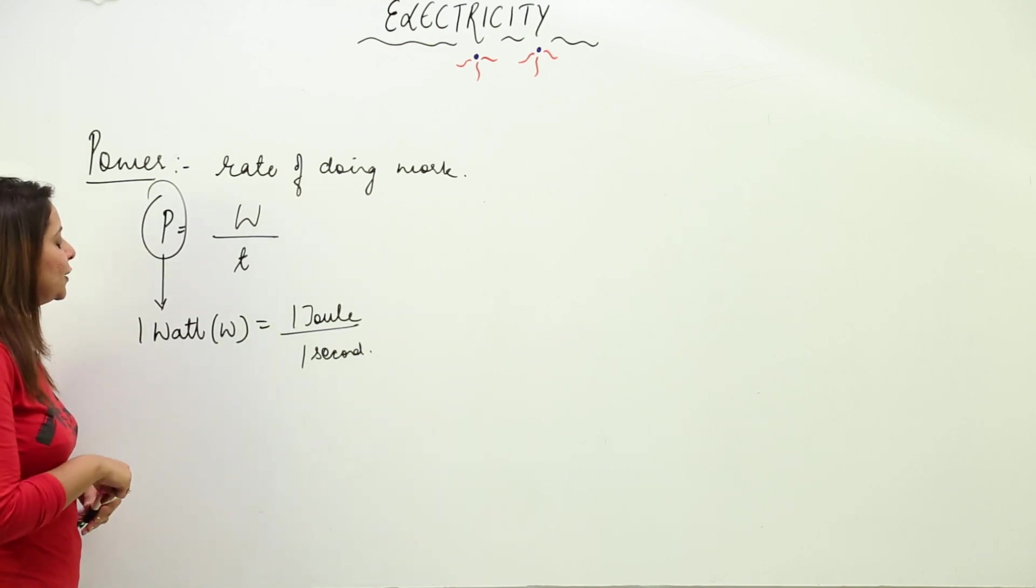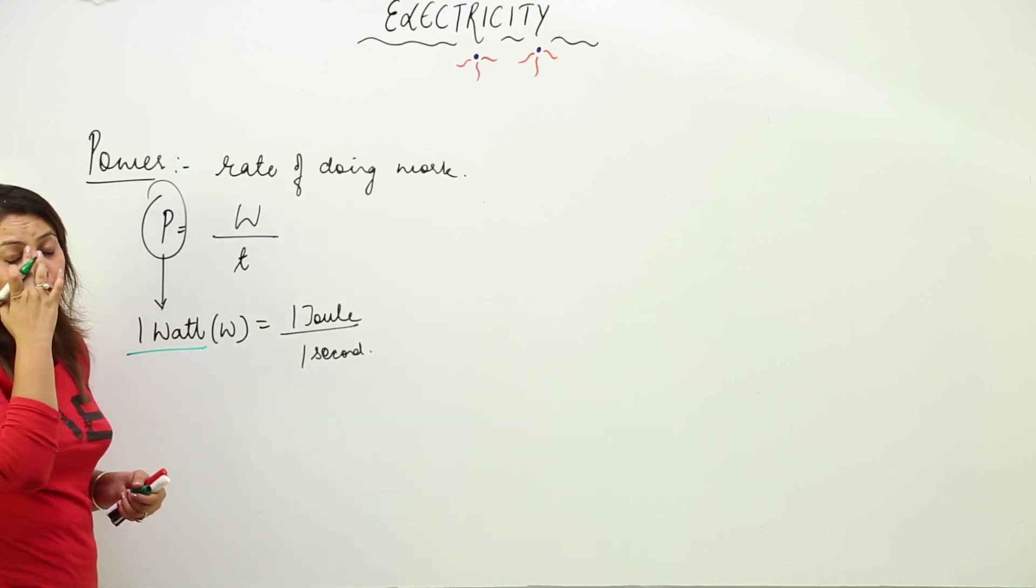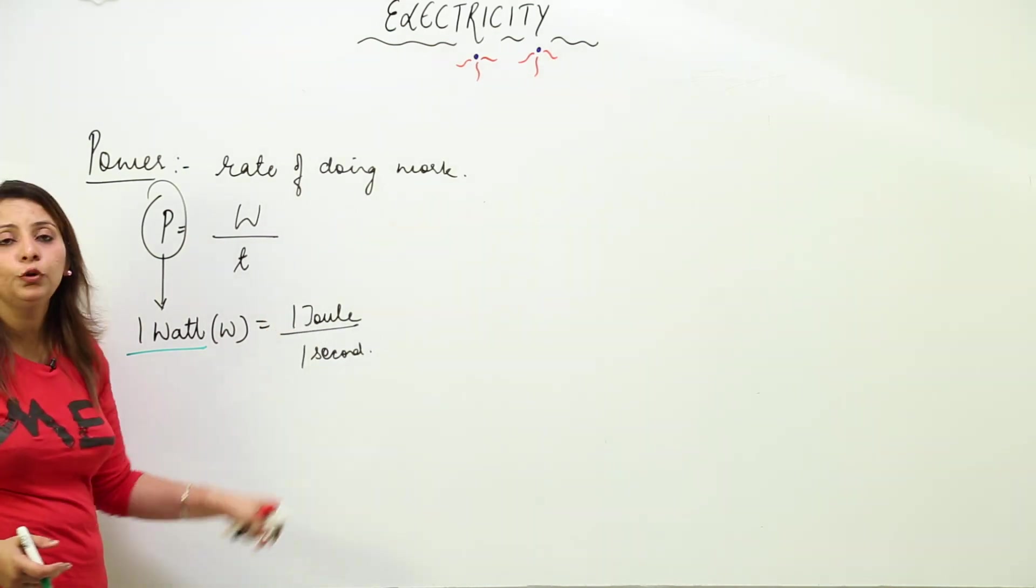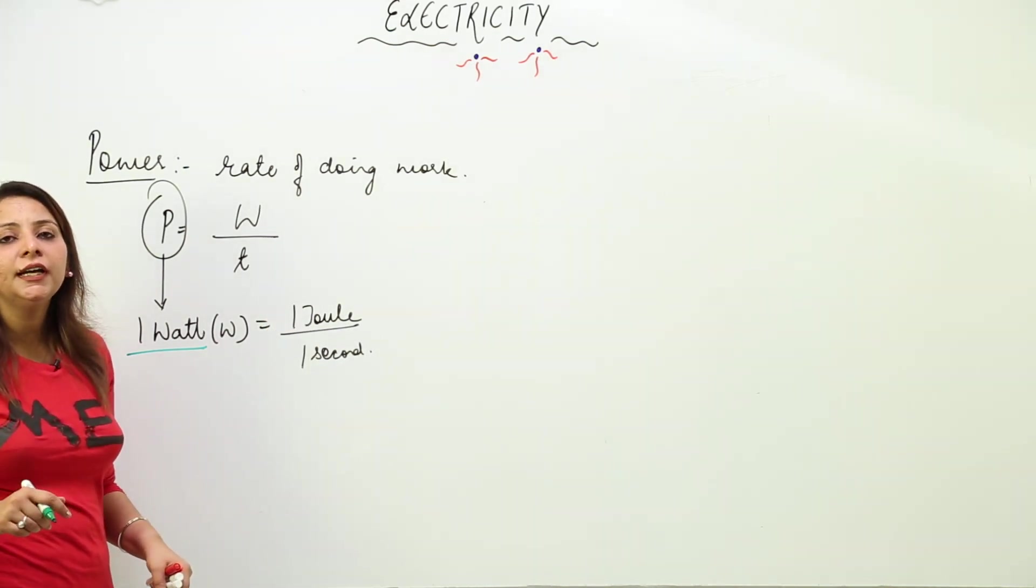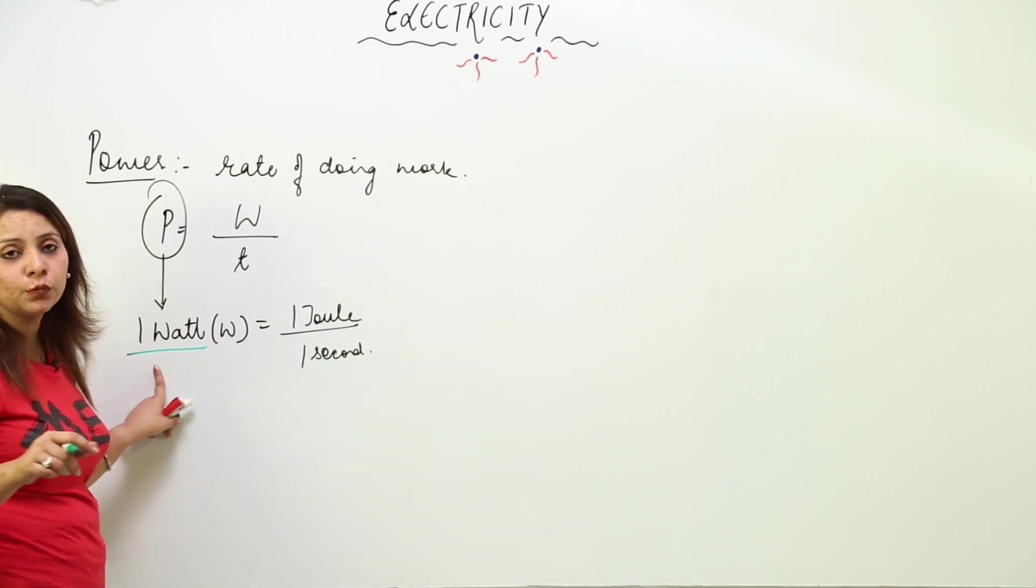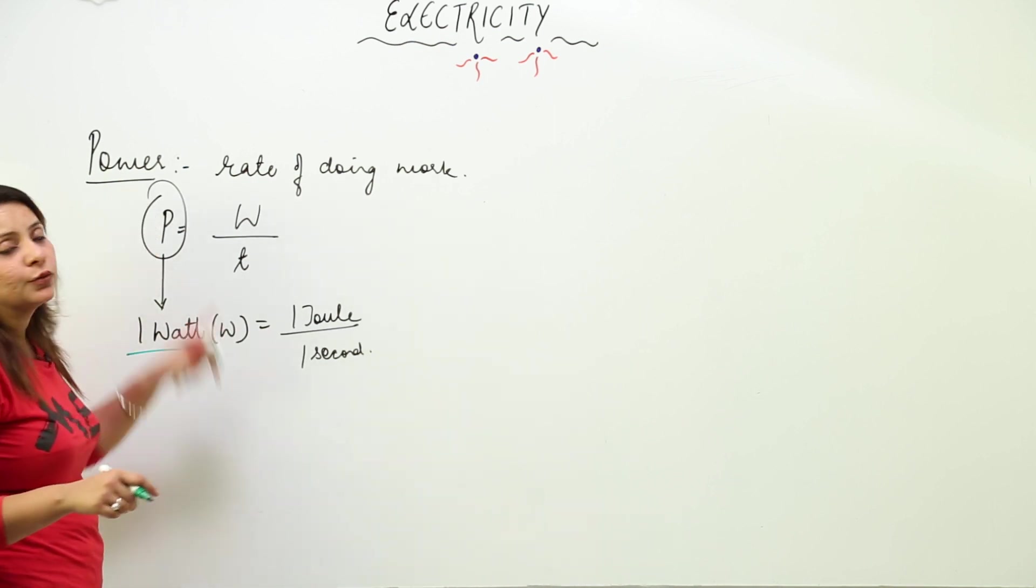If somebody asks what joule per second means, it equals 1 watt. But if asked what physical quantity is signified by joule per second, you need to answer that it is power.